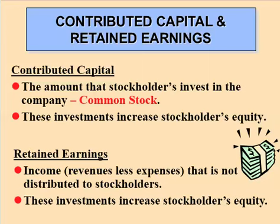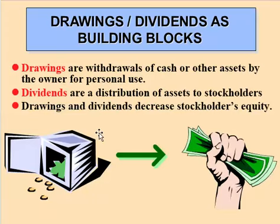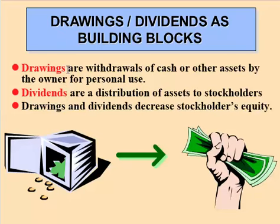Common stock is money invested by the stockholders, and that increases stockholders' equity. Retained earnings is any income — revenues minus expenses — that's not distributed back to stockholders, which is why it's likened to a company's savings account. Dividends are when a company makes money and shares that income back with stockholders in the form of a payment on their ownership claim. We also have drawings for sole proprietors and partnerships, which is similar to dividends — owners can just take money out of the business. Both drawings and dividends decrease stockholders' equity.